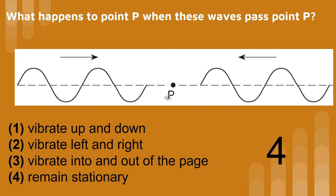What happens to point P when these two waves pass over point P? Do they vibrate up and down, vibrate left and right, or vibrate into and out of the page, or remain stationary? The answer is 4 — remain stationary. Since the wave on the left overlaps destructively with every wave on the right, the medium remains stationary.